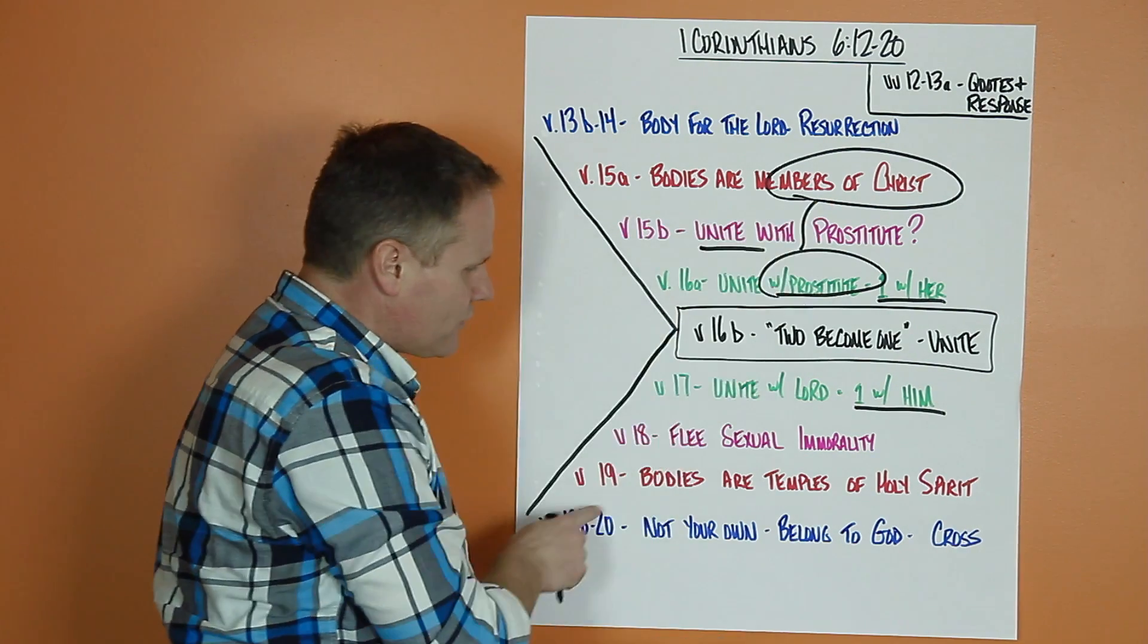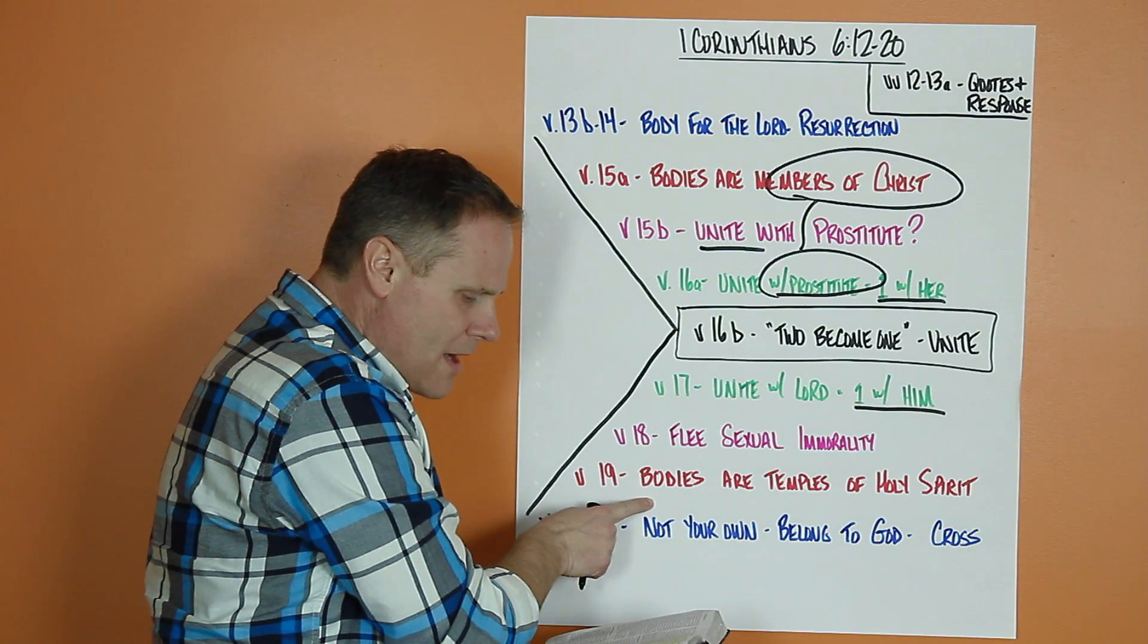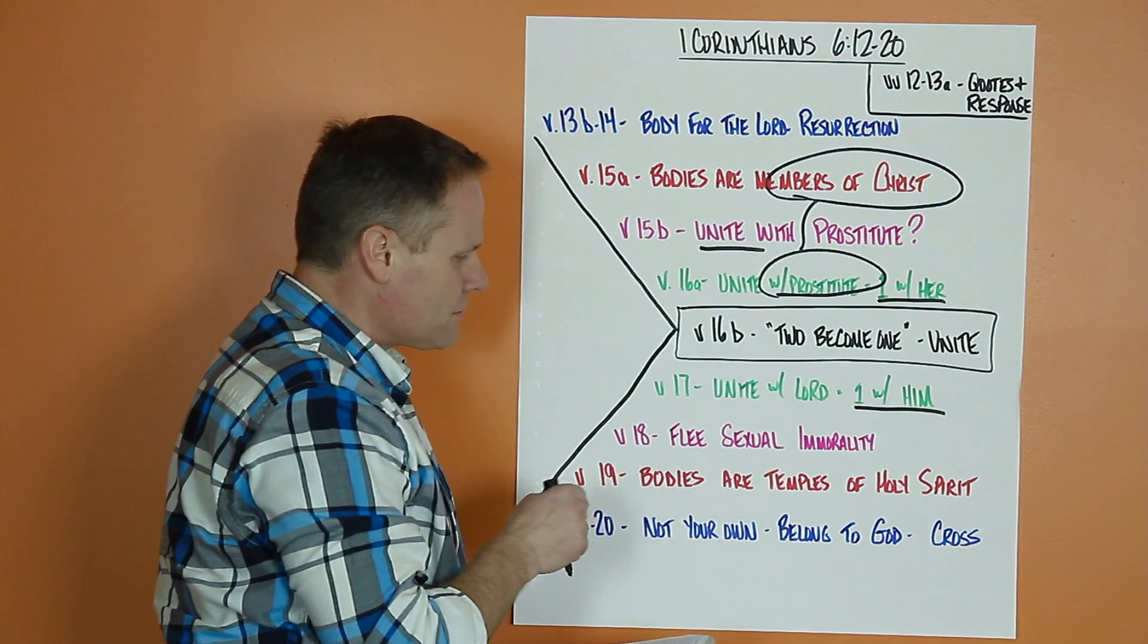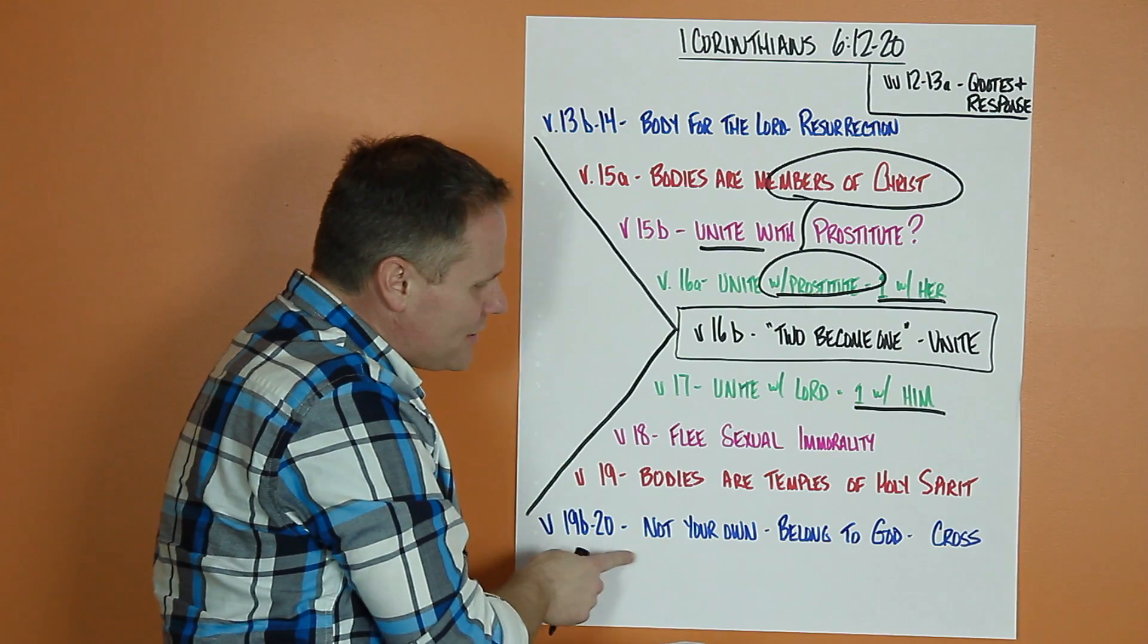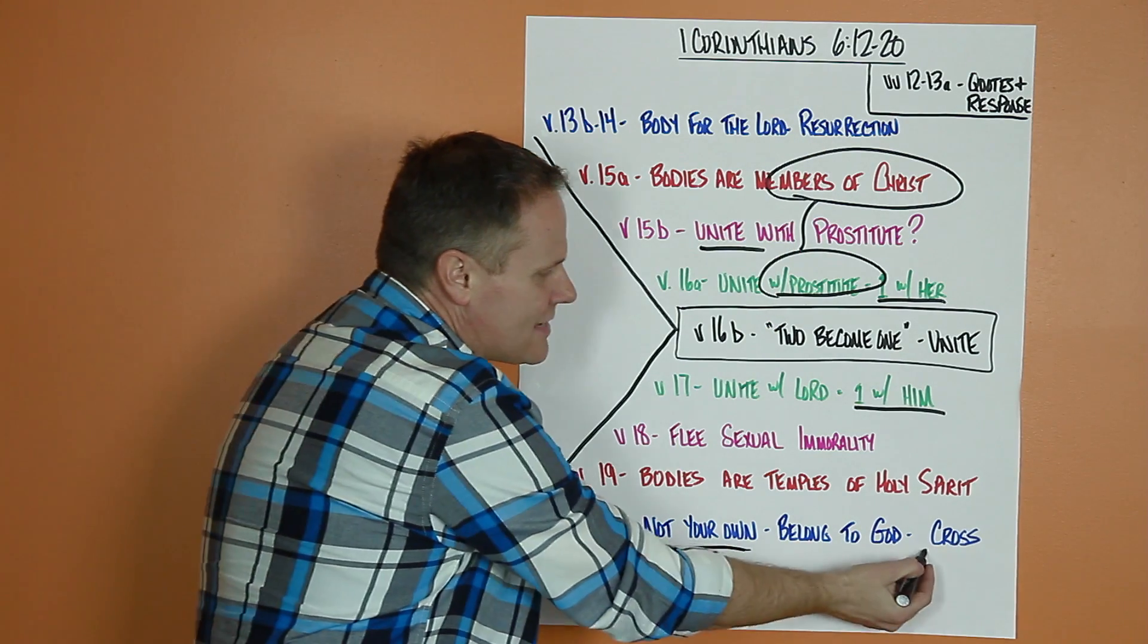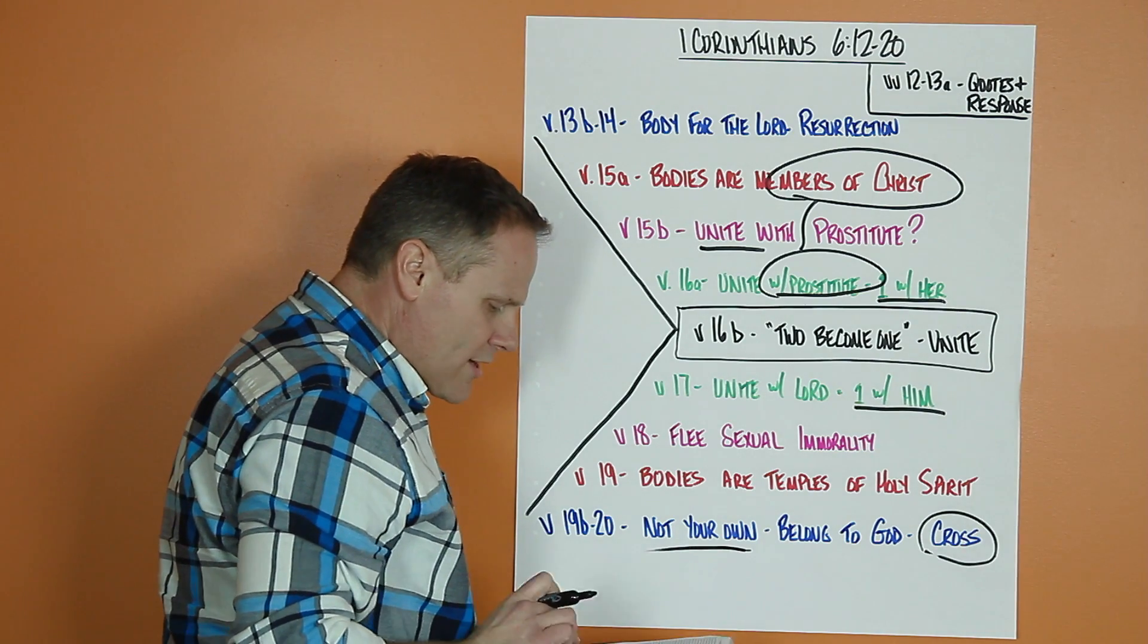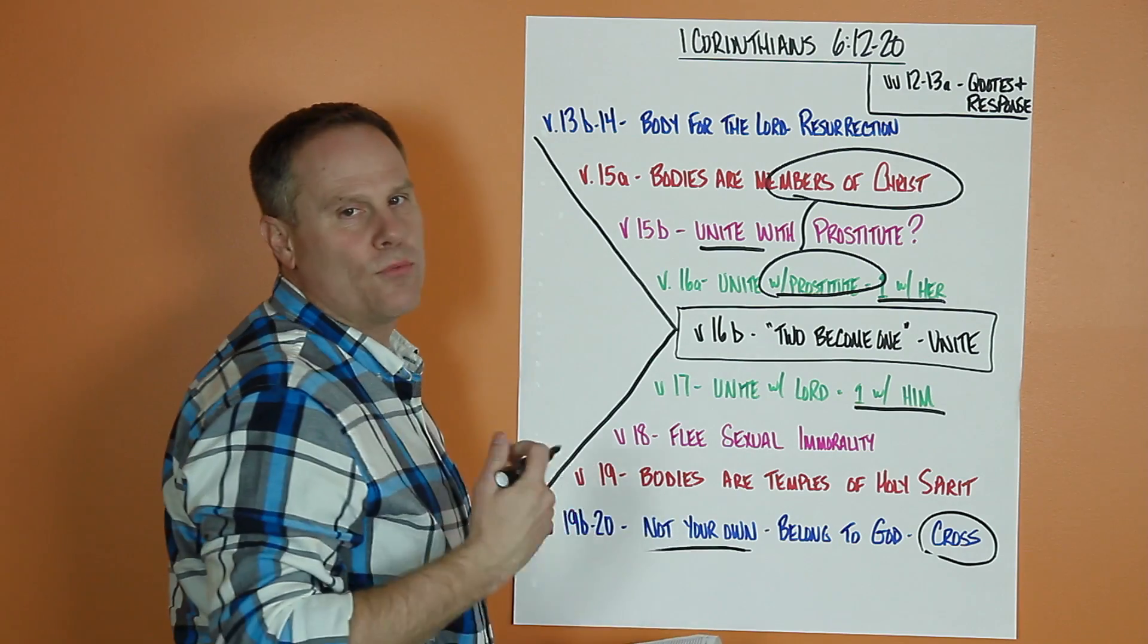Then up here, we saw bodies are members of Christ. Now he's going to state it a little bit differently in 19. Do you not know your body is a temple of the Holy Spirit? Members of Christ, temple of the Spirit. And he began with the body is for the Lord, emphasizing the resurrection. Now he says, you are not your own, and he emphasizes the cross. Verse 19, at the end: you are not your own. You were bought at a price through the cross. Therefore, honor God with your body.